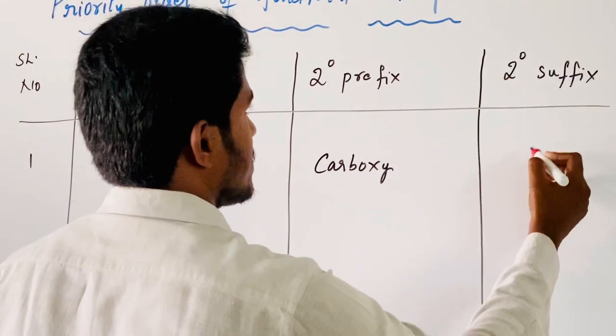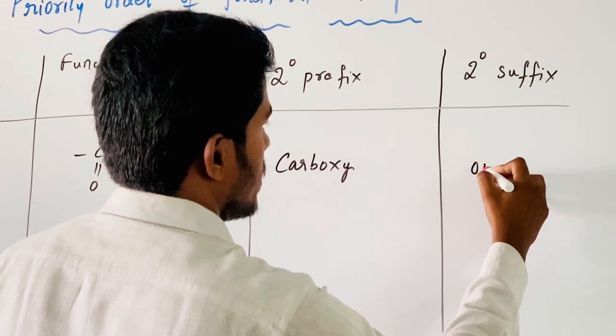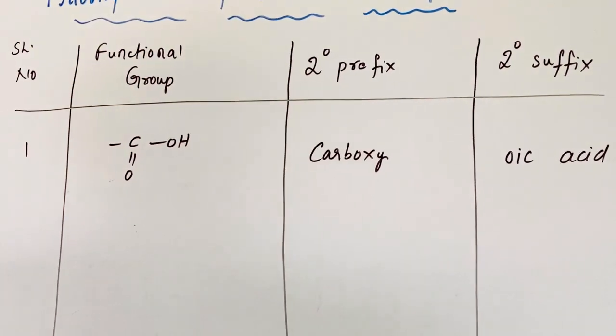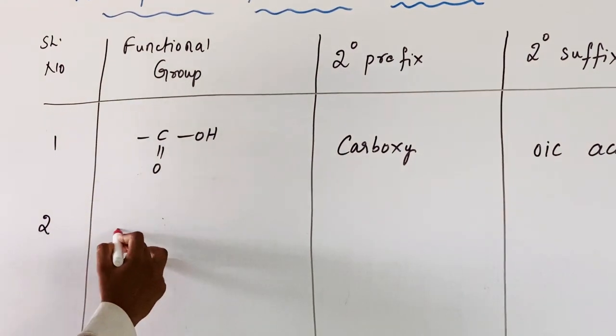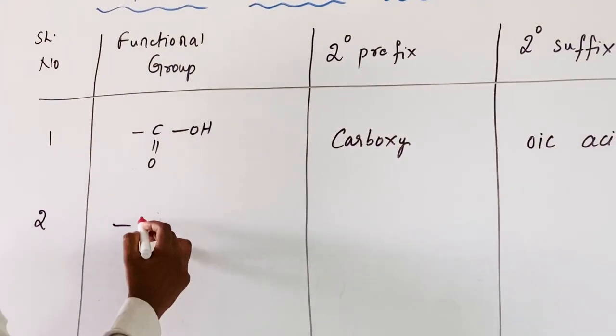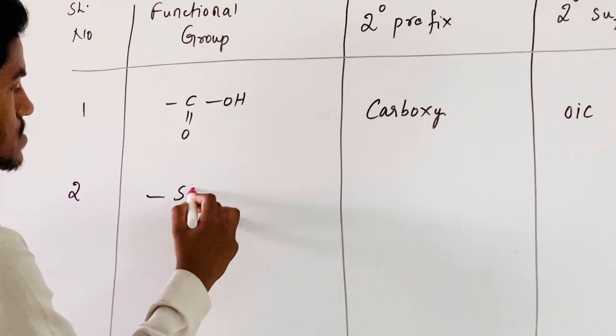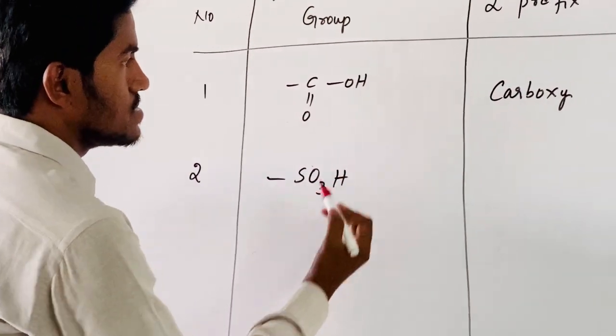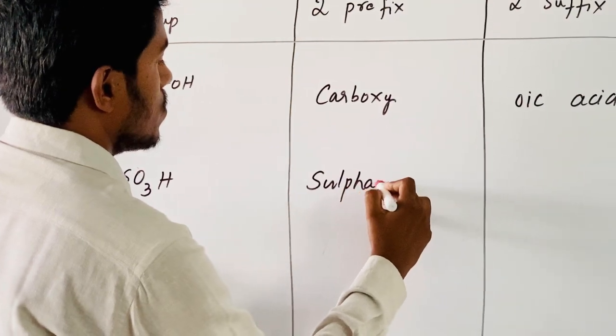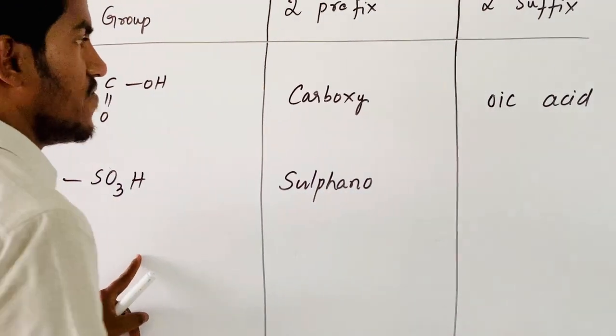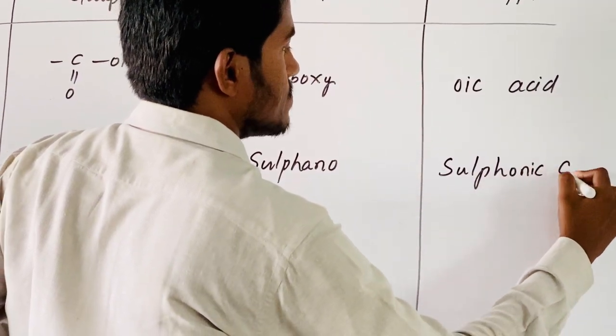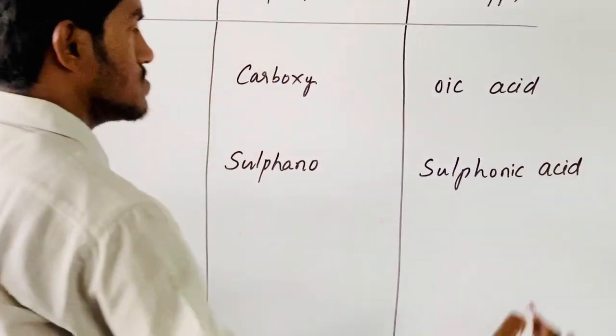Coming to the second one, that is sulfonic acid. One of the hydrogen atoms in sulfuric acid is replaced with R-SO3-H. Its prefix is sulfo, and its secondary suffix is sulfonic acid.